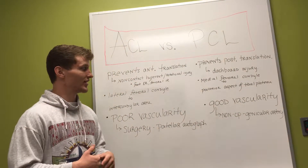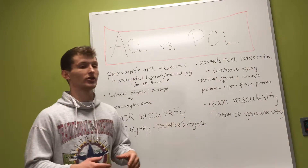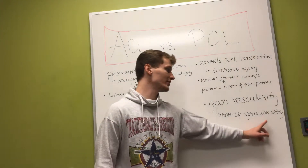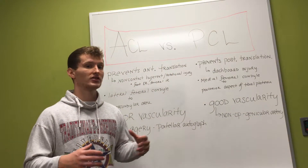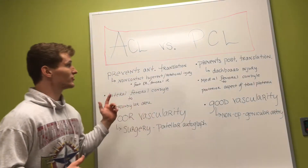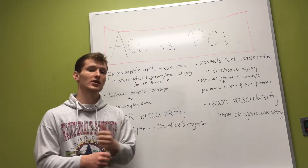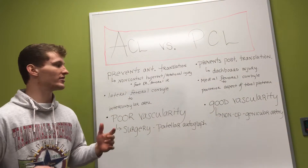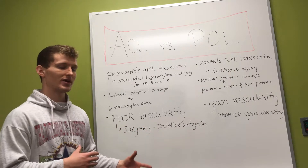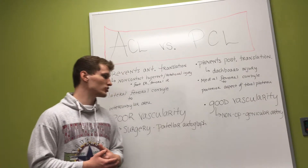A key difference between the PCL and the ACL is that the PCL is often treated non-operatively because it has good vascularity — it is supplied blood by the genicular artery. Because of that good vascularity, PCL injuries can oftentimes be treated non-operatively. Both ligaments prevent translation of the tibia in different directions on the femur and provide knee stability, but because they have different roles, different methods of injury, and different vascularity, they result in a different surgical status.